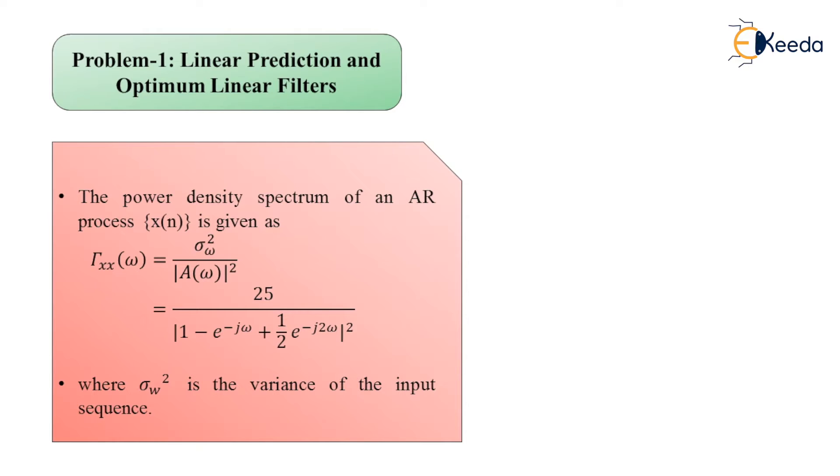So now see, in the given problem statement, we have been provided the expression for the power density spectrum or power spectral density. And here it is denoted by capital gamma_xx(ω). Omega is actually referring to the angular frequency here, and this is with respect to the discrete time random process which is of the special type autoregressive, hence we call it the AR process. These are the given details. And now we move on to see the exact problem statement that is requiring us to find solutions for a few things here.